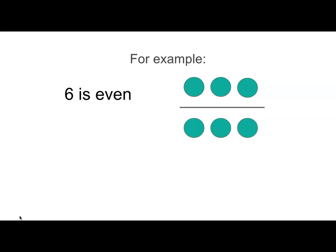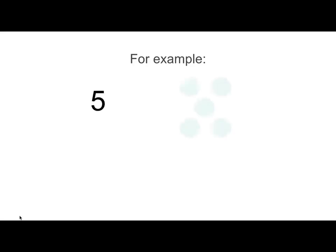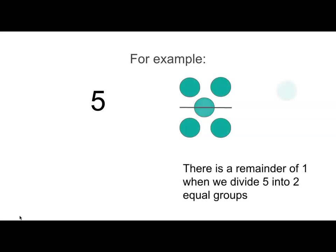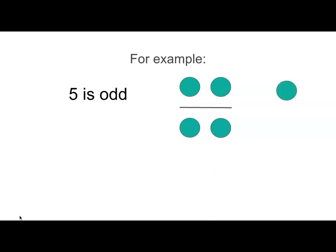So six is even. Now think about the number five. Can five be divided by two evenly? No. You can see that there is a remainder of one when we divide five into two equal groups. Five is odd.